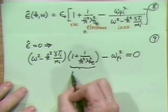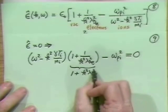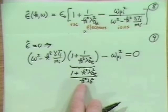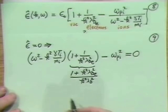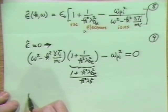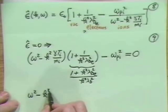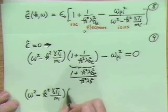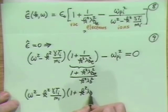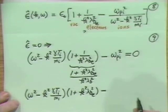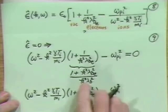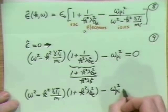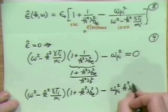It's convenient to multiply through by k squared lambda Debye squared, to make it 1 plus k squared lambda Debye electron squared, all divided by k squared lambda Debye electron squared, and then multiply it up. So if we do that, we obtain a dispersion relation which looks like omega squared minus k squared gamma Ti over Mi, times 1 plus k squared lambda Debye electron squared, and then minus omega Pi squared times k squared lambda Debye electron squared, equal to zero.